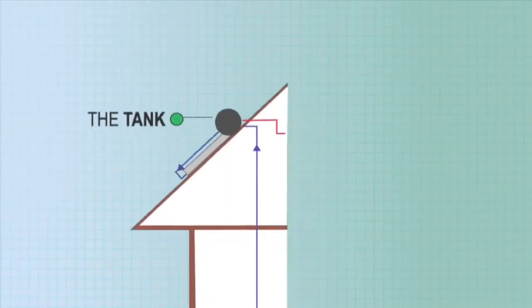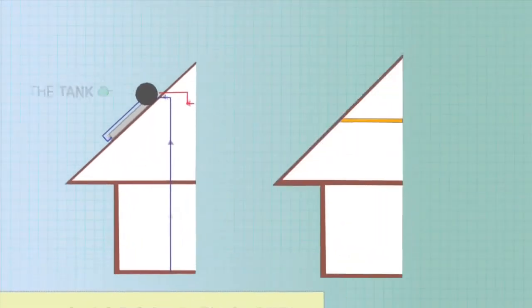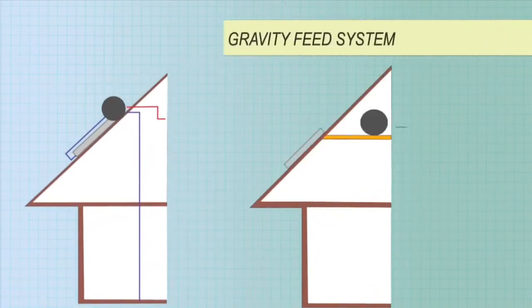The tank may sit on the roof with the collector, a close coupled system, or within the roof cavity above the collector, a gravity feed system.